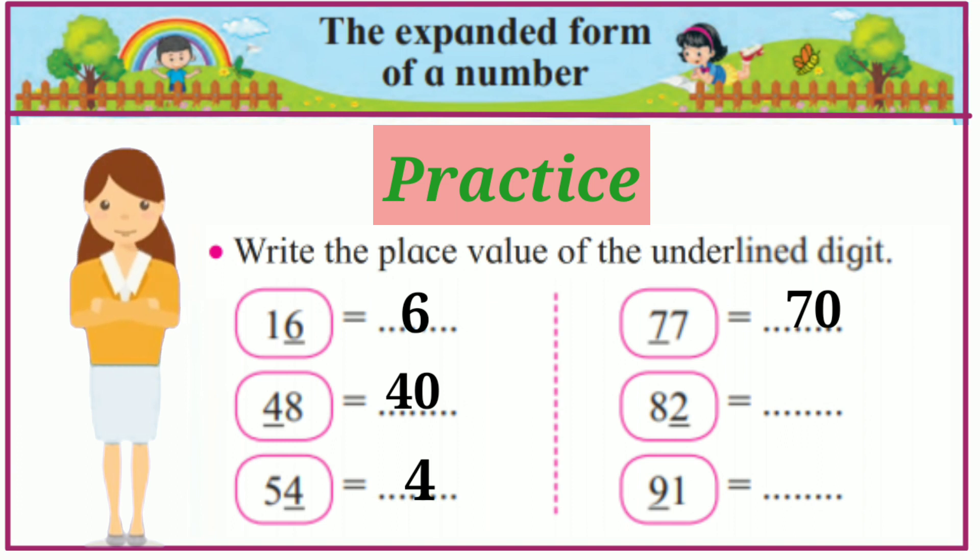77. The place value of 7 is 70. 82. The place value of 2 is 2. 91. The place value of 9 is 90.